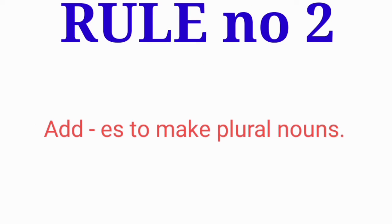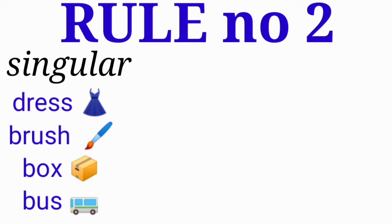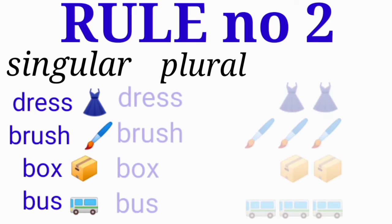Rule number two: add ES to make plural nouns. In singular form, the examples are: dress, brush, box, and bus. Now in plural form,